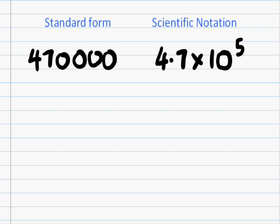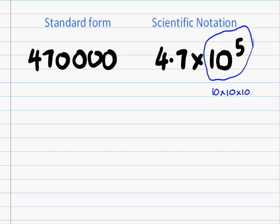It's very important that you're able to convert between these two ways of writing numbers, and it is quite an easy thing to do. Let's look at this 10 to the 5. Just to make sure you're okay with what we're looking at — 10 to the 5 also means 10 by 10 by 10 by 10 by 10 by 10.